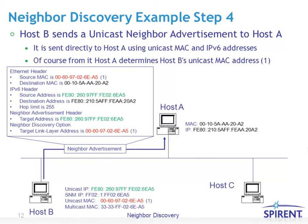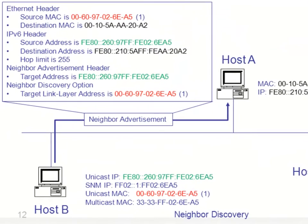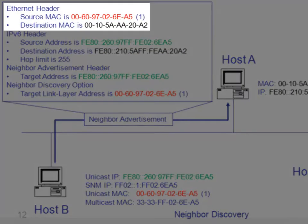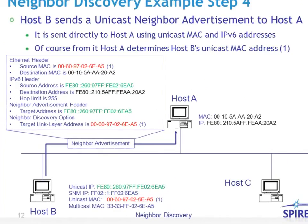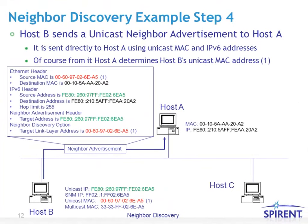Step four: once host B determines the neighbor solicitation packet is for it, it sends a unicast advertisement back to host A. Now that both nodes know each other's unicast MAC addresses, they don't need to deal with multicast at the MAC or IP layer anymore. Host B returns its burnt-in MAC address, and both hosts can now use each other's burnt-in MAC addresses to communicate.